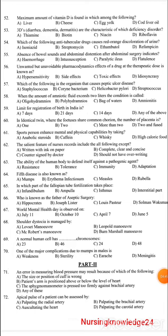An error in measuring blood pressure may result from: wrong size or position of cuff, wrong patient arm position above or below heart level, sphygmomanometer pressed too firmly against the brachial artery. The answer is any of these.